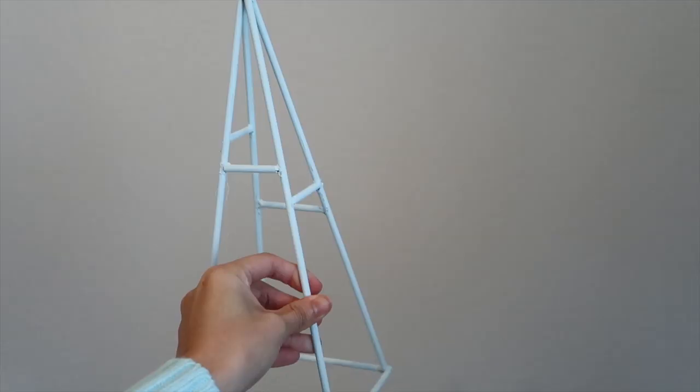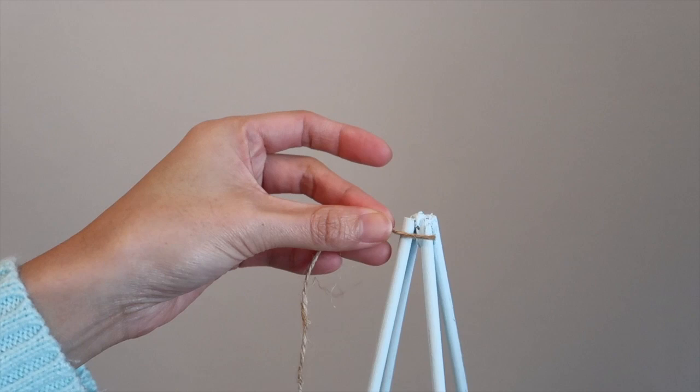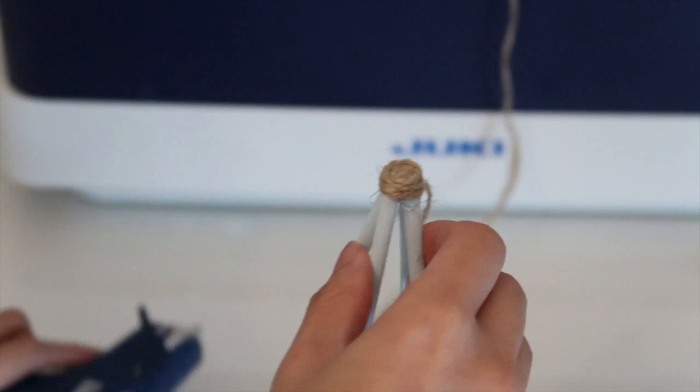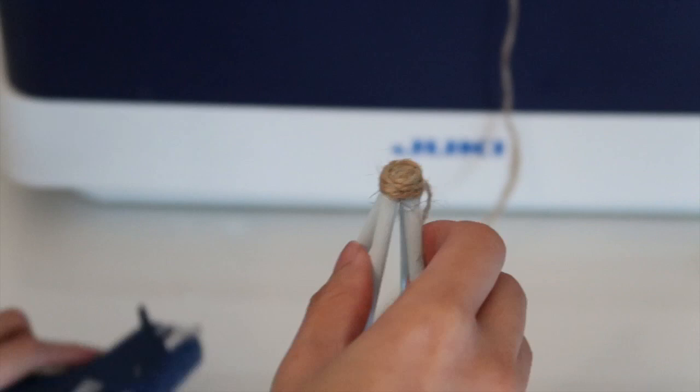It looks so cute just like this, but I decided to take it another step. I added some twine right on the top and on the edges of the dowels. I hot glued it and wrapped it around a few times, and that's pretty much it.